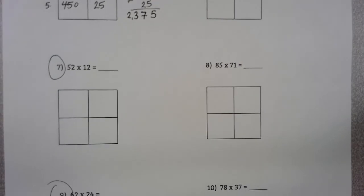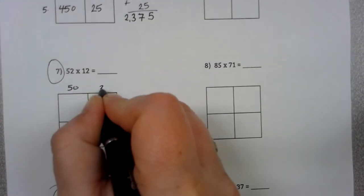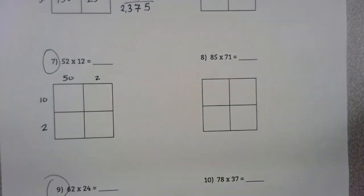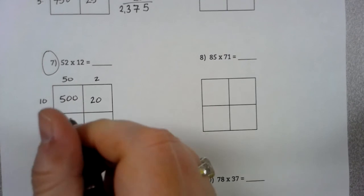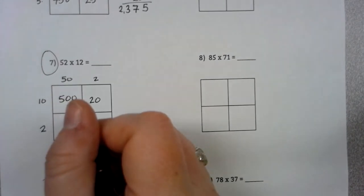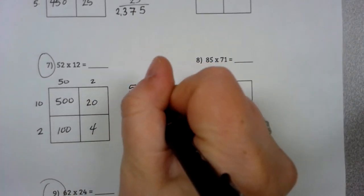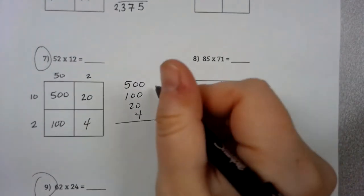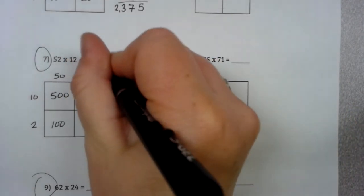Now, I have 52 times 12. Break up the 52 into 50 and 2. 12 breaks up into 10 and 2. Now, just multiply. 50 times 10 is 500. 10 times 2 is 20. 2 times 50 is 100. 2 times 2 is 4. So now all you do is add them together, you line them up, and you add 4, 2, 6. 624.